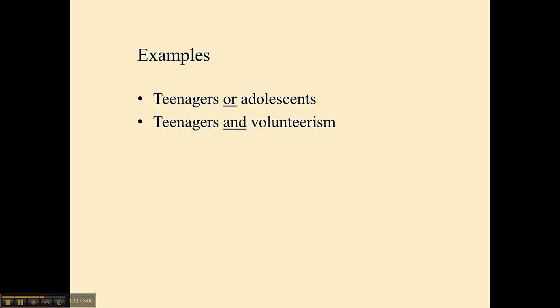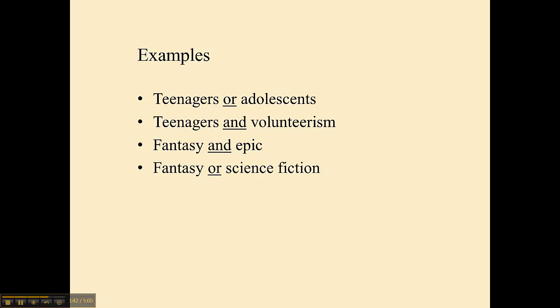For example: 'teenagers OR adolescents' — those are the same thing to me, so I'm going to use OR in between. But 'teenagers AND volunteerism' — those are not synonyms; I want both of them to be present in the article, so I'm going to use AND in between. 'Fantasy AND epic' — again, not the same thing; I do want both words present, so I'll use AND in between. But 'fantasy OR science fiction' — to me those are the same thing, so I'm going to use OR to indicate that those are synonyms.